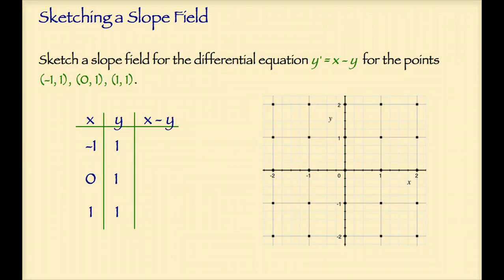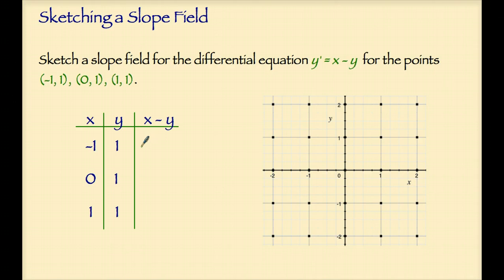Now we're going to sketch a slope field for the differential equation y' equals x minus y for the points negative 1 comma 1, 0 comma 1, and 1 comma 1. Remember that the differential equation is the slope function and will generate a slope for each of the points in the coordinate plane. For the point negative 1 comma 1, the slope will be negative 1 minus 1, which is negative 2.